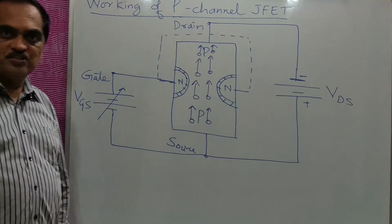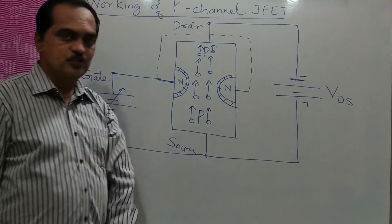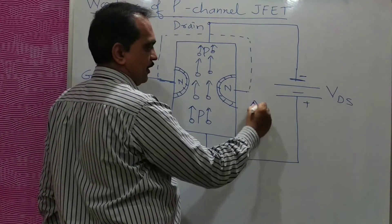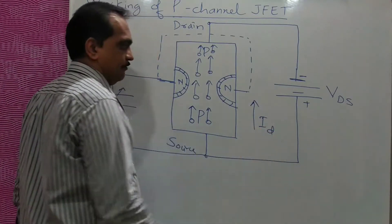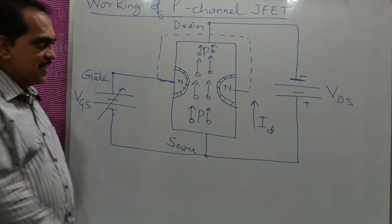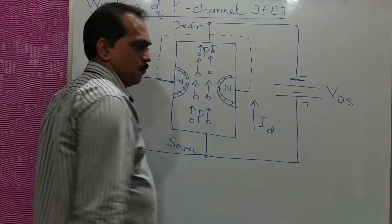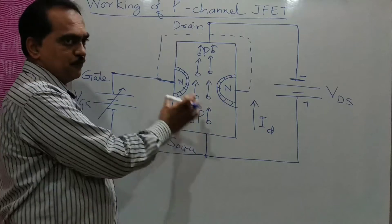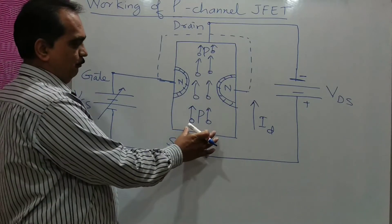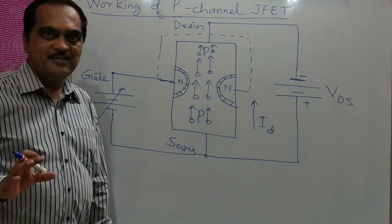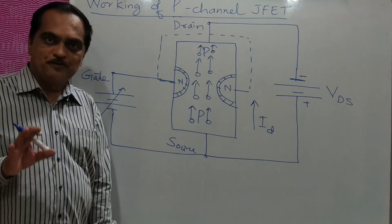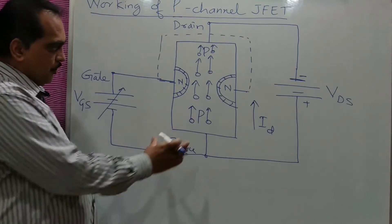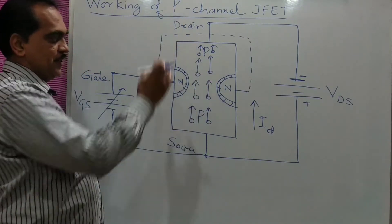Initially, you can keep VGS equal to zero and VDS equal to zero — at that time no holes will flow from source to drain, so drain current ID will be zero. But as you increase VDS and once it reaches the pinch-off voltage or above that, a maximum drain current which remains constant will flow from source to drain. The current ID will be maximum but will remain constant at that voltage, and beyond that there will be no effect of VDS on the current flowing.